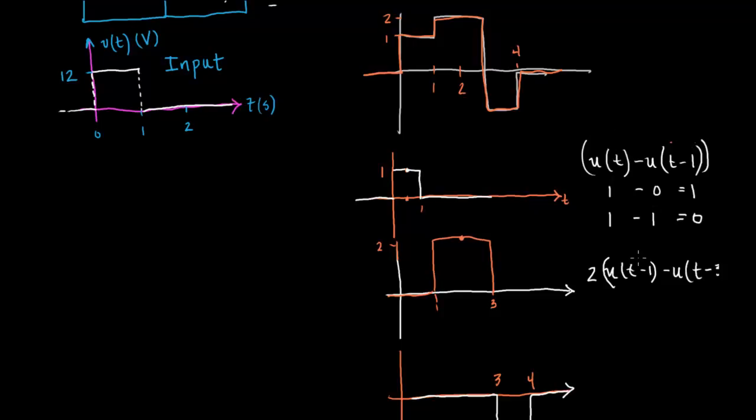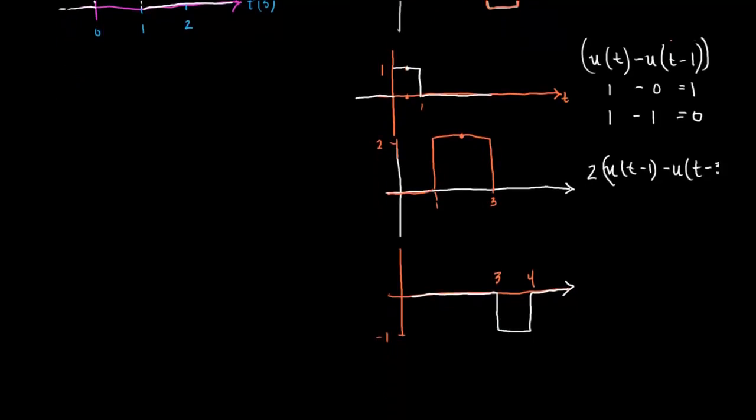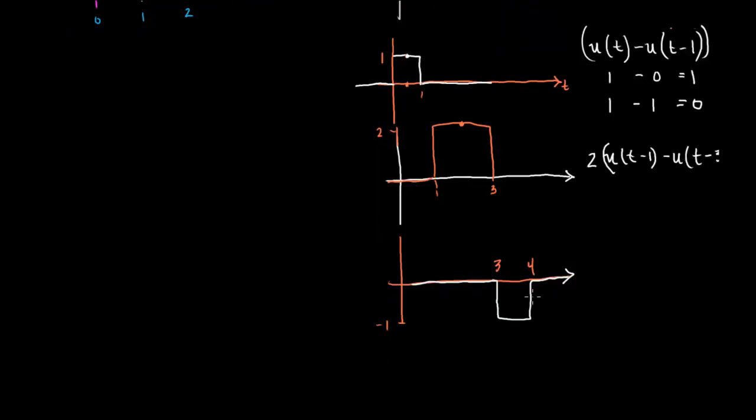If it's 1, then it's going to be t minus 1. If it were negative, it would be t plus something. And finally, how would we do this one? You might be able to figure it out. We're going to multiply by a magnitude of minus 1. U of t minus 3 minus u of t minus 4.